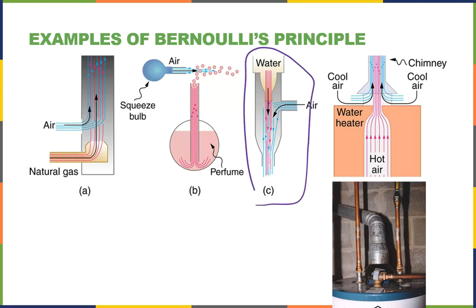The venturi we talked about for chemistry lab is another example. And there's the perfume bottle - the eau de toilette with the little squeeze bulb. When you do that squeeze, you're blowing air across the top of the pipe. Because you're blowing air across the top of the pipe, the pressure at the top decreases. You have atmospheric pressure in the perfume bottle and then the pressure at the top of this tube drops. Higher pressure below, lower pressure above, pushes the perfume up. Once it gets into the stream of air, it goes out as little droplets.